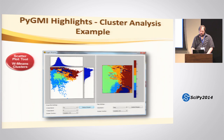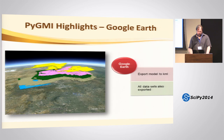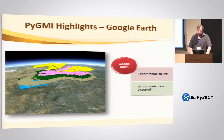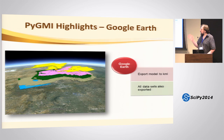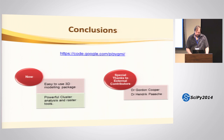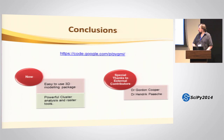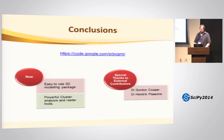We exported our model to a KML file for Google Earth. I didn't use any libraries for this because the script is trivial — just saving text to a file while changing coordinates. But it's really cool that you can give a model to somebody in that format. I'd like to thank Dr. Gordon Cooper and Dr. Hendrik Posh for some code they graciously let me use. What we have now is a nice, easy-to-use forward modelling package with cluster analysis and raster tools. I don't claim to be a software developer, so I'm sure I've made mistakes, but this conference has been awesome and I have a lot of ideas to take back. Thank you.